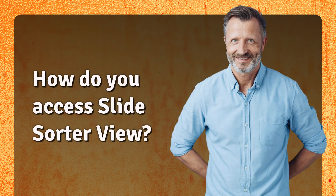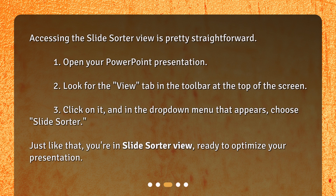How do you access Slide Sorter View? Accessing the Slide Sorter View is pretty straightforward. First, open your PowerPoint presentation. Then look for the View tab in the toolbar at the top of the screen. Click on it, and in the drop-down menu that appears, choose Slide Sorter. Just like that, you're in Slide Sorter View, ready to optimize your presentation.